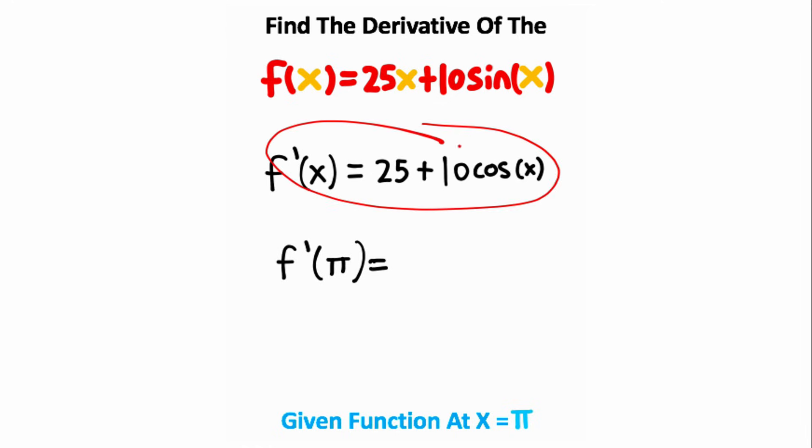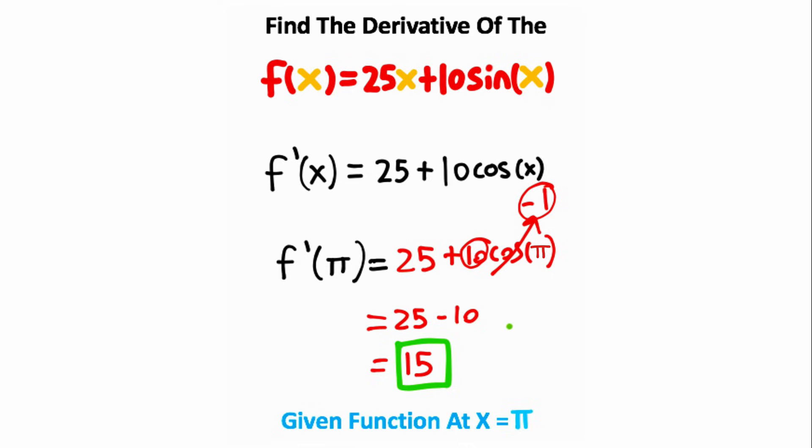So now that I have my derivative, I want to evaluate this derivative when x is equal to pi. So 25 is just going to remain 25 in this equation, and then we're going to add this to 10 times the cosine of pi. The cosine of pi, that's equal to negative 1, so what we'll have is negative 1 times this 10. So this equation is going to be 25 plus negative 10, or minus 10, and 25 minus 10 is 15. So 15 is the answer to the problem.